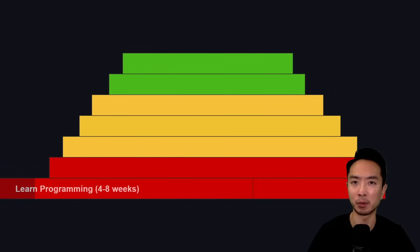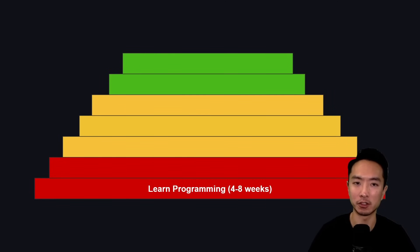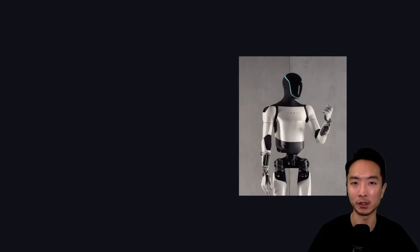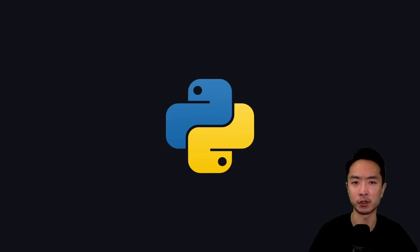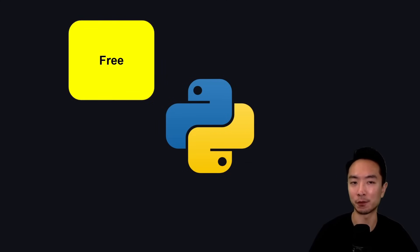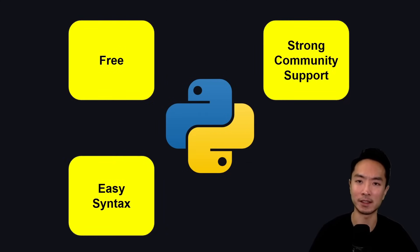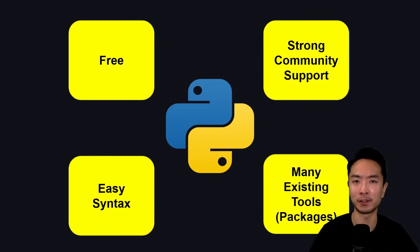The first step is learn programming. You should spend about four to eight weeks here. The main question is: how do I tell my robot what to do? In order to communicate with a robot, you need to give it code. If you're just starting off, Python would be the best option. It's free, it has strong community support, easy syntax, and a lot of existing tools and packages related to robotics.